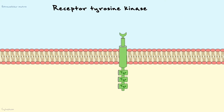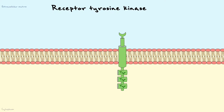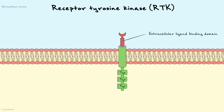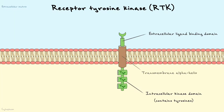Let's start with the structure of these receptors, which are often simply abbreviated to RTKs. RTKs are rather different from G-protein coupled receptors, as they have only one subunit with an extracellular binding domain. In the intracellular portion of the receptor, it has a kinase domain, and the two domains are connected via a transmembrane alpha helix.